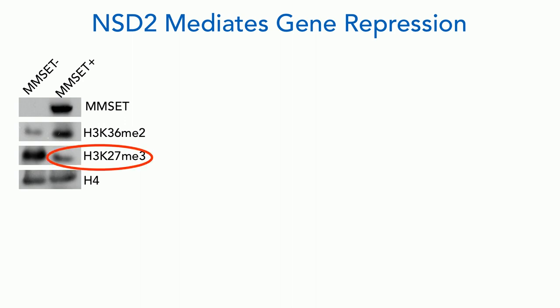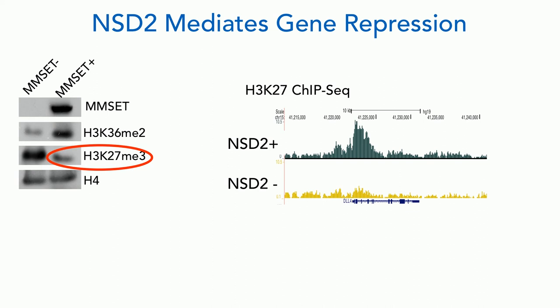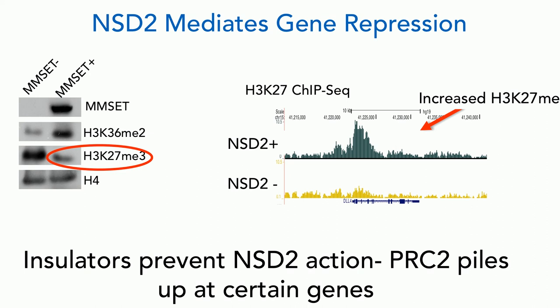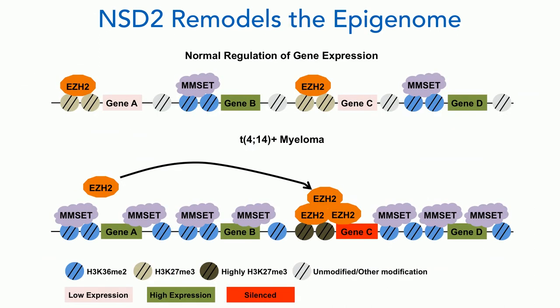When NSD2 is overexpressed, it precludes K27 trimethylation and EZH2 deposition at some genes, apparently turning genes on because K36 dimethylation precludes the polycomb complex from acting — we get aberrant gene activation. Even though global K27 methyl marks are low in MM-SET-high cells, some genes get repressed, with K27 methylation piling up at sites near CTCF insulators where NSD2 cannot access. The basic idea: normally EZH2 is at repressed genes and NSD2 at activated genes. When MM-SET is overexpressed, EZH2 is displaced from some genes and pushed onto others, creating a pathophysiological mess of gene expression.